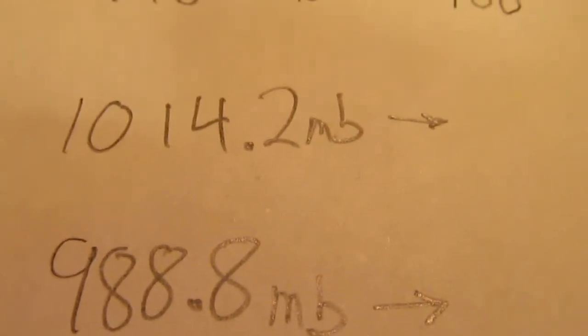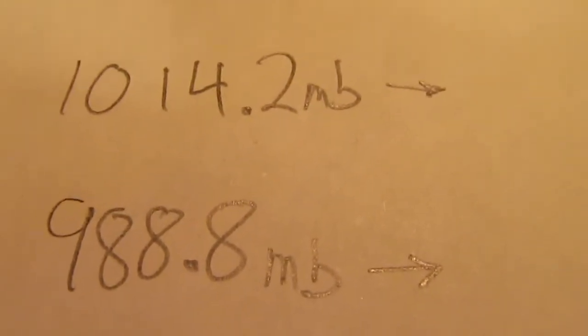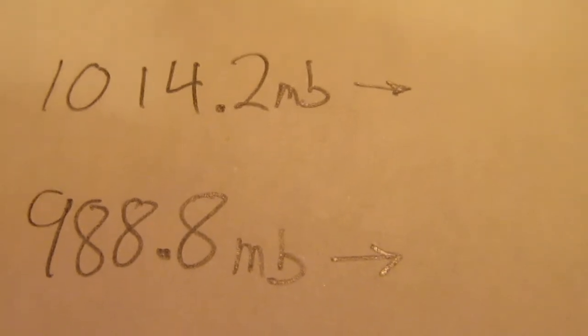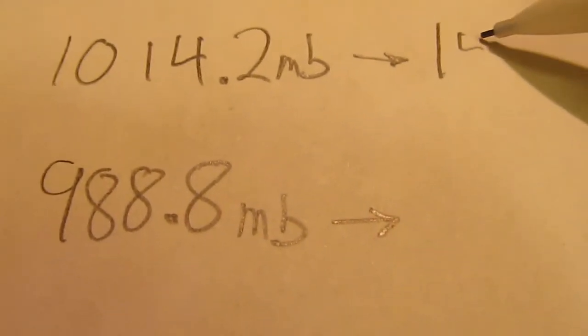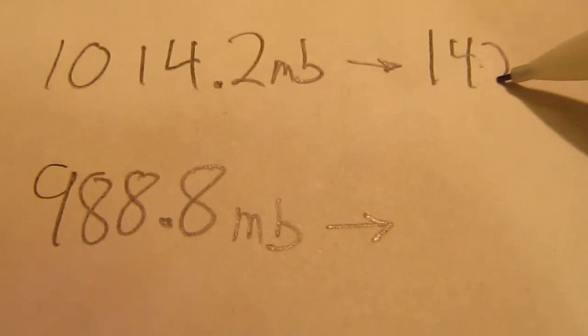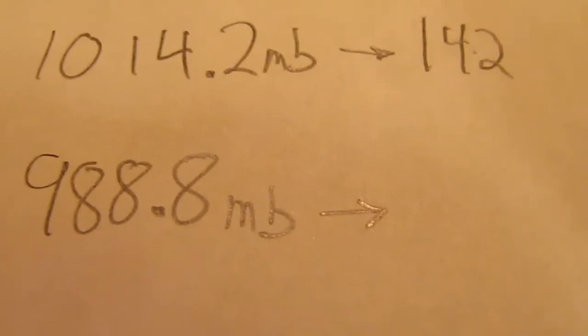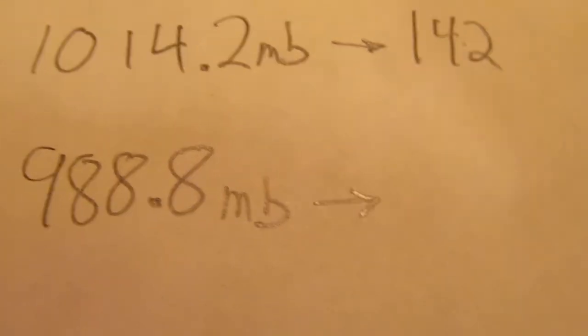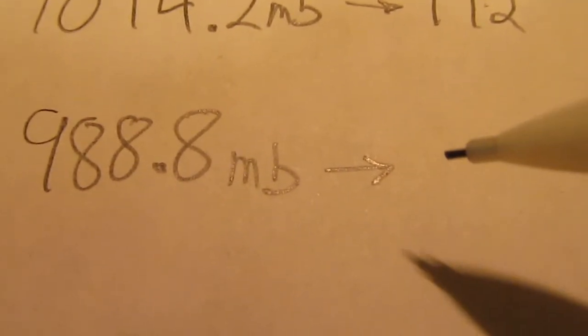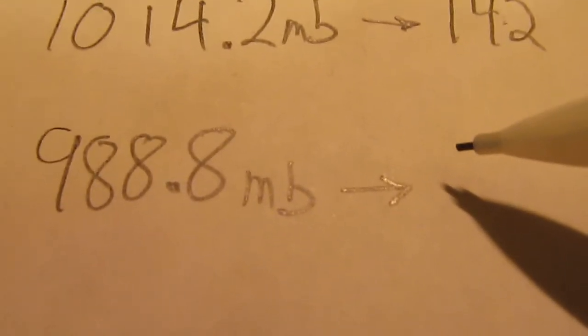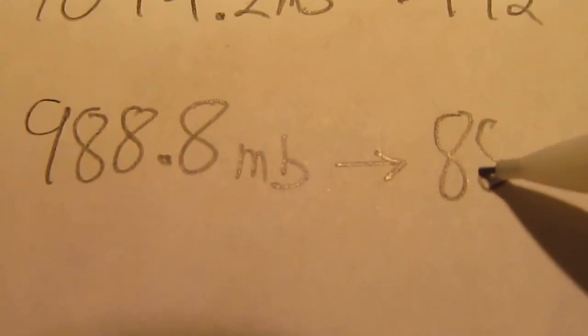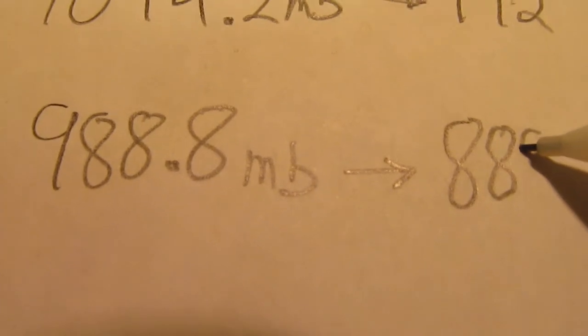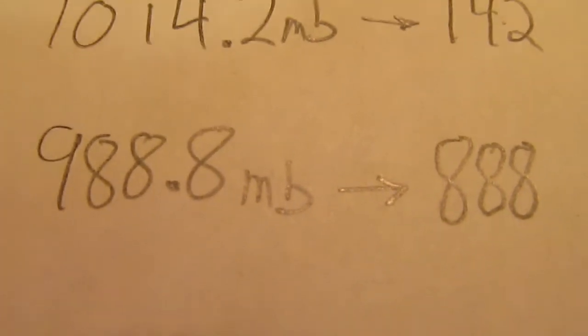Here's a couple more for us to take a look at. We've got 1014.2 millibars. What will that convert to? Well, drop the 10, we're left with 14.2, but remember drop the decimal point. So on the weather station we would write 142. And what if it's 988.8? Well, remember you drop the 9 on the left side, so we would have 88.8, but we're going to write 888 because remember, drop the decimal point.